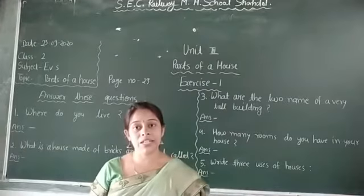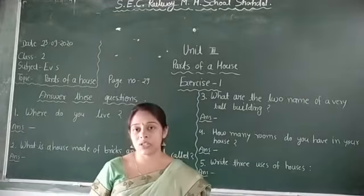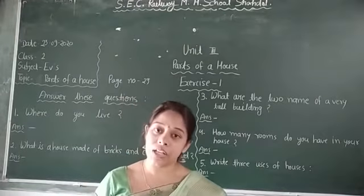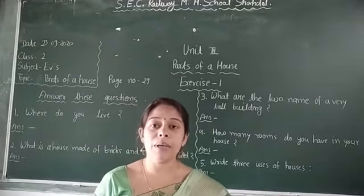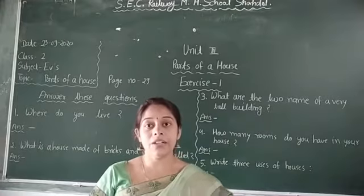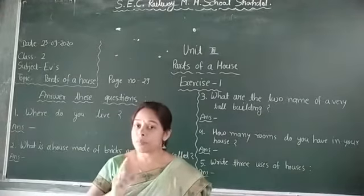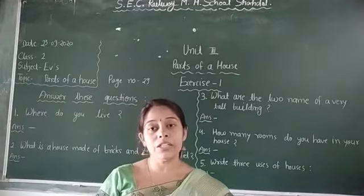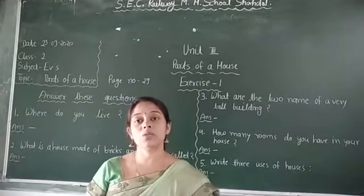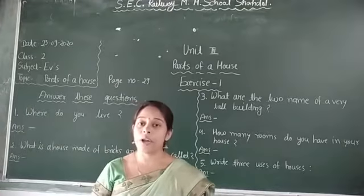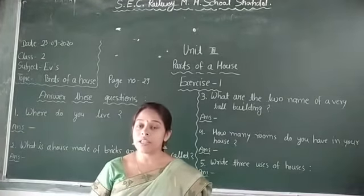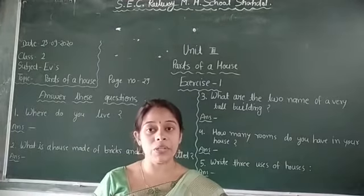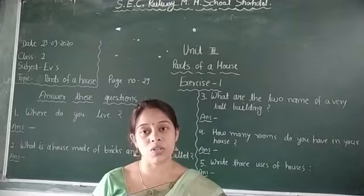To keep ourselves safe, to keep our family safe, we need a house. Ghar hume bahut saari cheezon se surakshit rakhta hai. The most important things — the three things that we most need protection from — are thandhi (cold), garmi (heat), and baarish (rain). Our house keeps us fully safe from these three things.